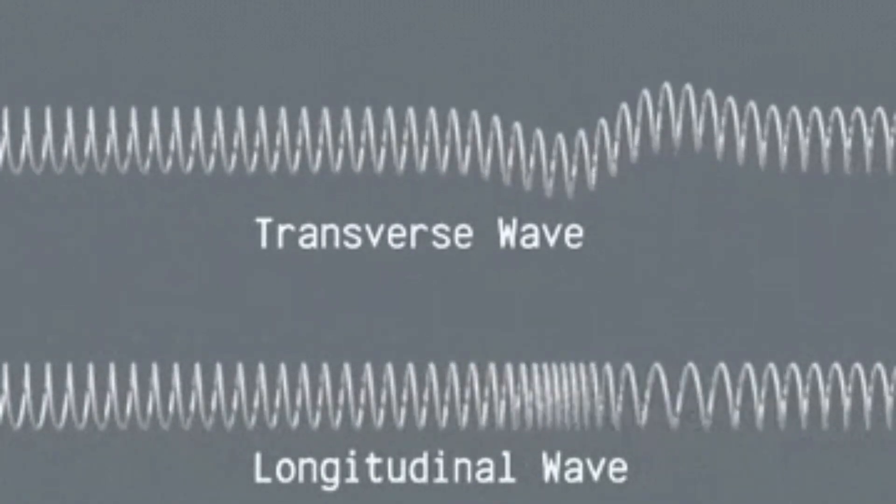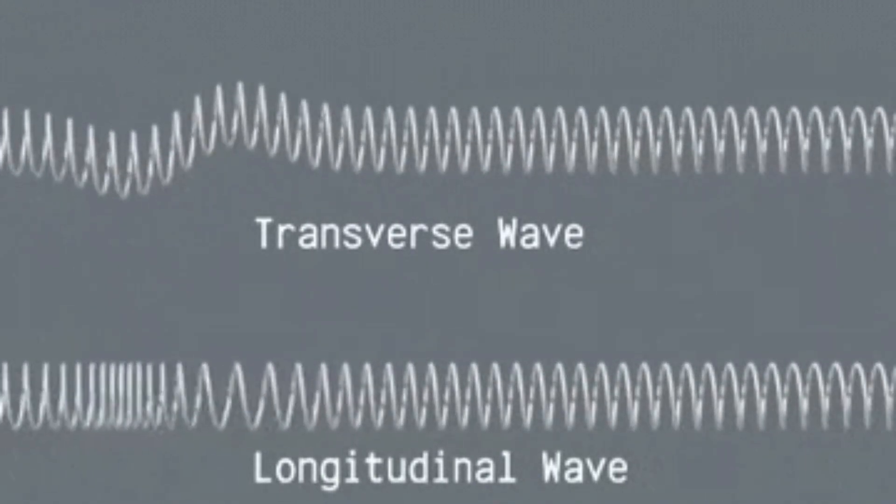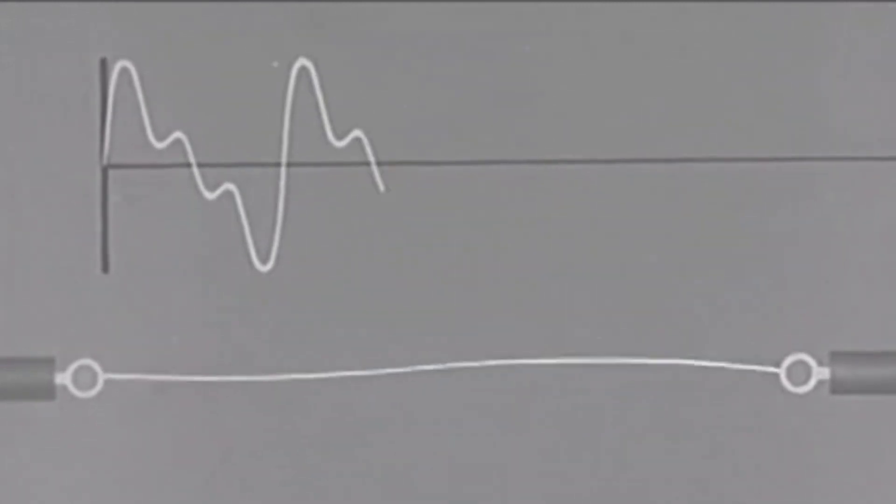In physics, waves are disturbances that travel through a medium. This can include water, air, or even solid objects.